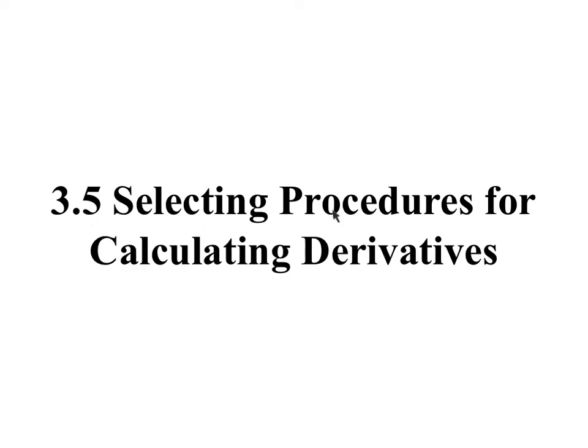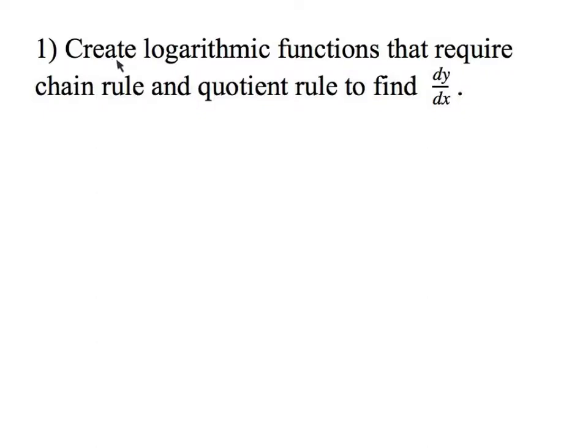3.5 Selecting procedures for calculating derivatives. We're going to create logarithmic functions that require chain rule and quotient rule to find dy dx. If I'm finding dy dx, I know I'm going to start with y equals, and I'm just going to make up logarithmic functions. So a logarithmic function that has chain and quotient would look something like this: natural log of x squared over 3 minus x.